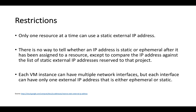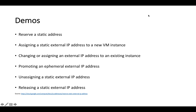What you can do is go to your external IP addresses list, grab the list, and compare it against the IP addresses of your virtual machines. There are command-line tools to do that, but it's pretty painful from the console. Each virtual machine instance can have multiple NICs, but each interface can only have one external IP address — either ephemeral or static. So if you need multiple static IP addresses on your VM, you just attach multiple NICs.